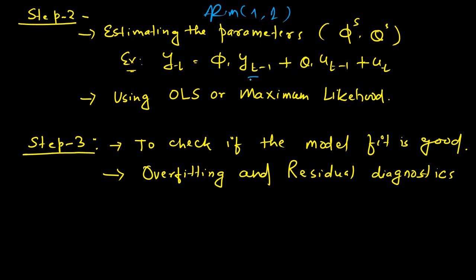The AR term has one lag and the MA term also has one lag. So this is the ARMA(1,1) model. It is very clear that the AR component has only one lag and the MA component also has one lag. Using estimation techniques, it could be ordinary least squares or maximum likelihood.